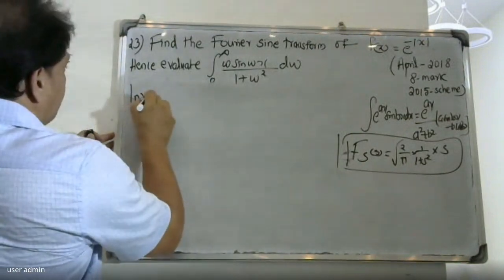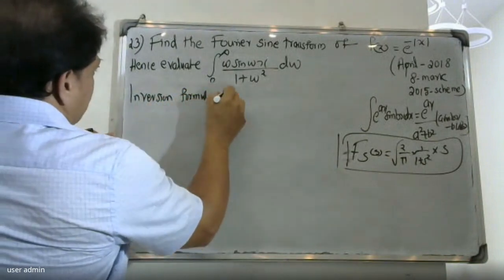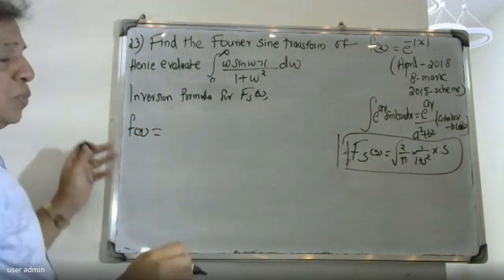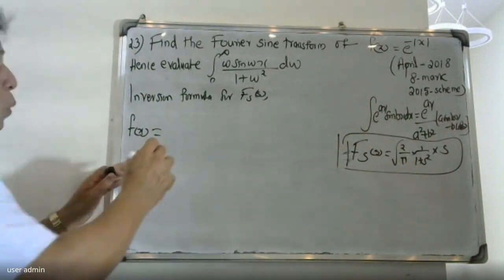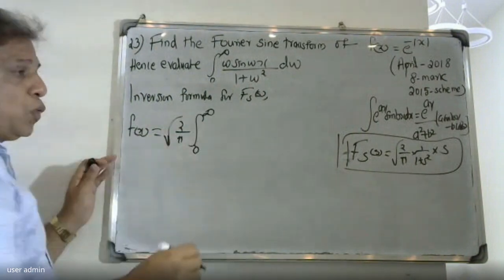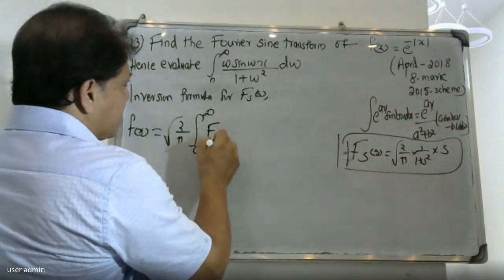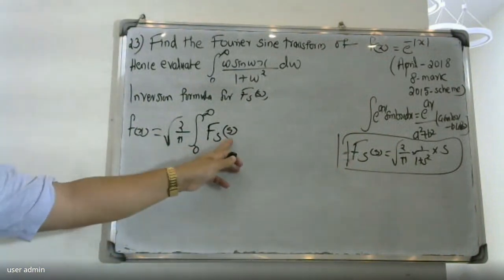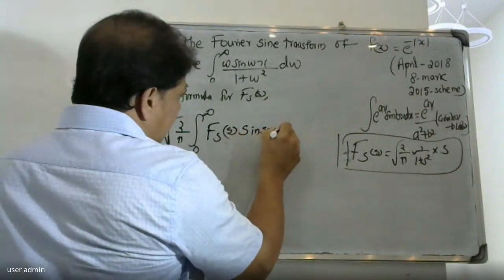Now we use the inversion formula. The inversion formula for the Fourier sine transform states that f(x) is equal to root of 2 by pi, integral from zero to infinity of F_s(s) into sine(sx) ds.